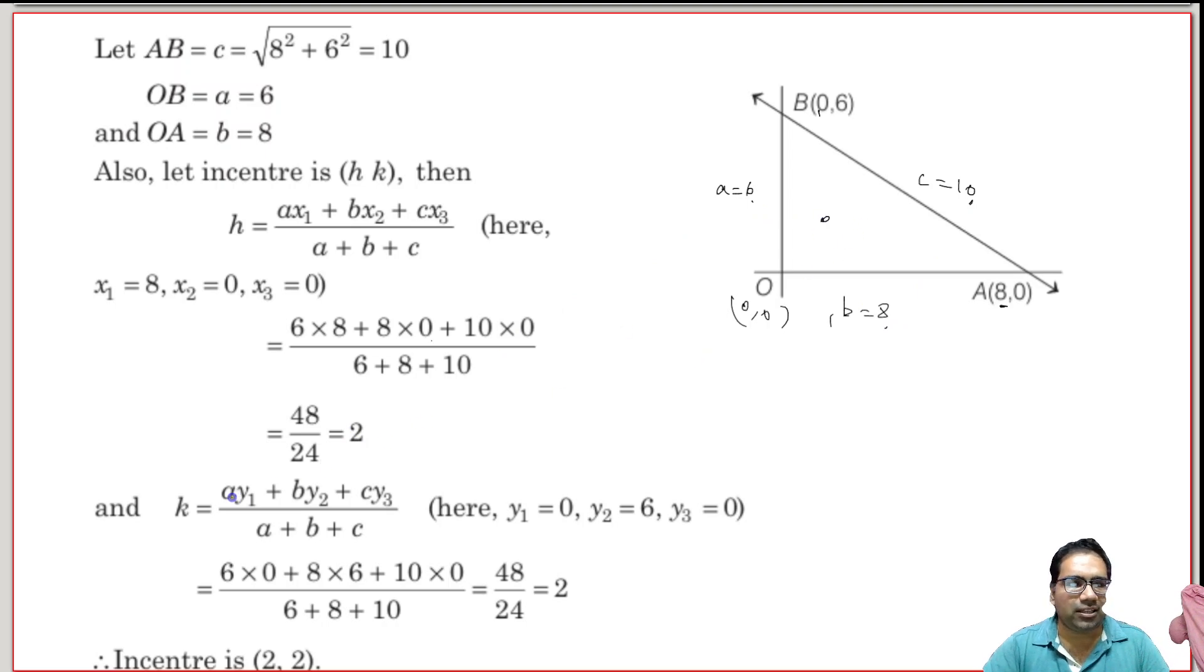And what about the y-coordinate? The y-coordinate is again A y1: 6 into 0 plus B y2, which is 8 into 6, plus C y3, which is 10 into 0, by A plus B plus C. Again, the total is 48 by 24, which is again 2.